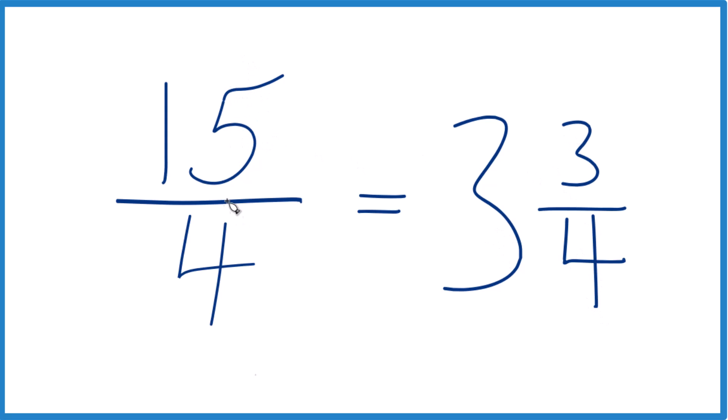So the improper fraction 15 fourths, when we write that as a mixed number, we get 3 and 3 fourths.